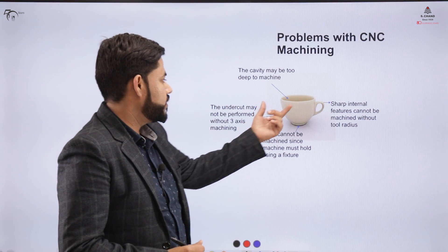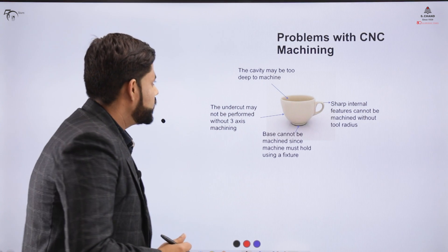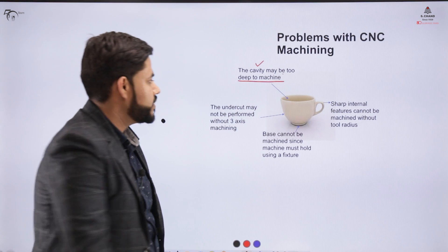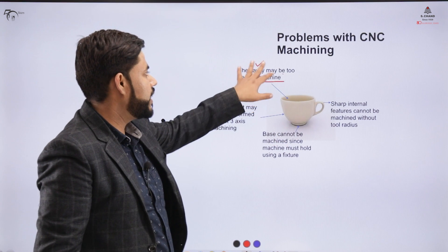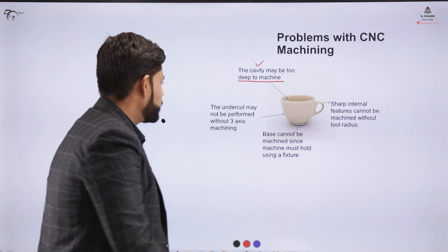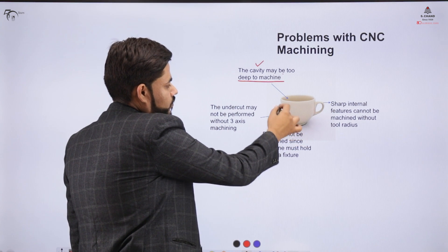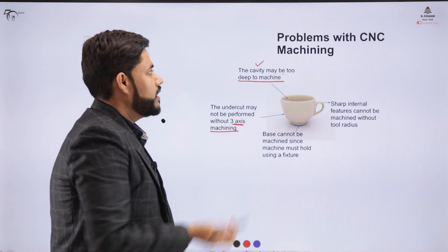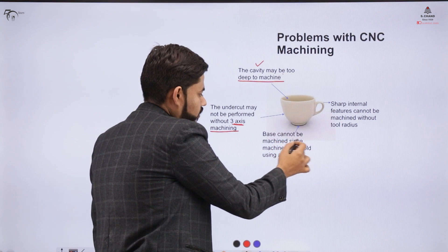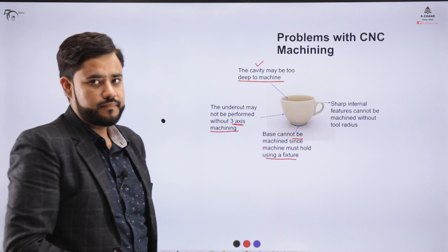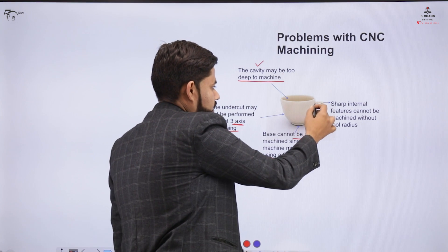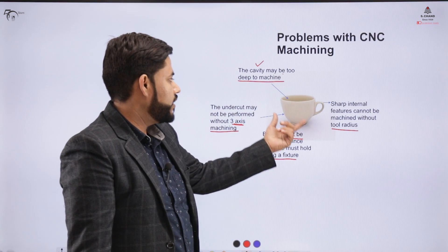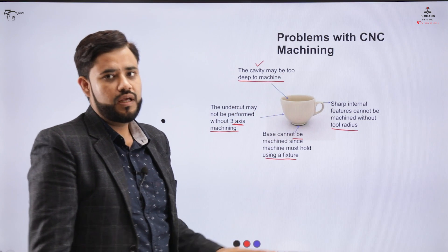Let us look at certain problems which CNC machining faces that additive manufacturing does not. When we want to produce a model of a cup, the cavity is too deep to be machined. If we incorporate a CNC machine for this cavity, it can be a problematic situation. The undercut required to remove this material cannot be performed without a 3-axis machining setup. The base cannot be machined without a separate fixture, and sharp internal features cannot be machined without the tool radius.